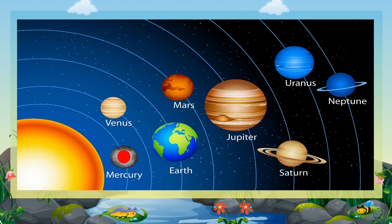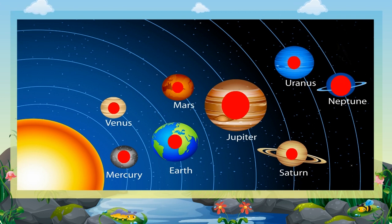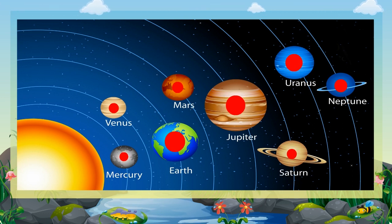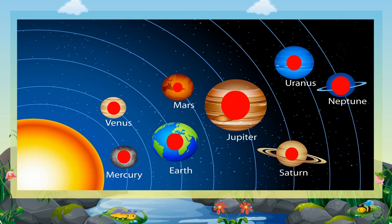They are Mercury, Venus, Earth, Mars, Jupiter, Saturn, Uranus, and Neptune in the order of their distance from the Sun. All these eight planets revolve around the Sun.